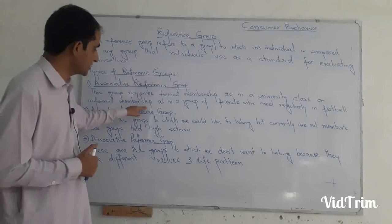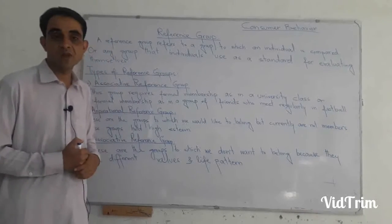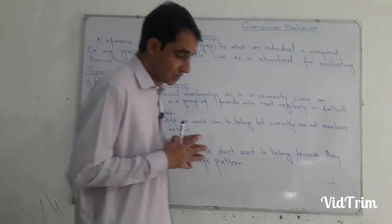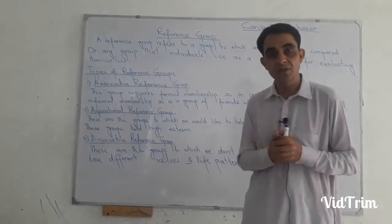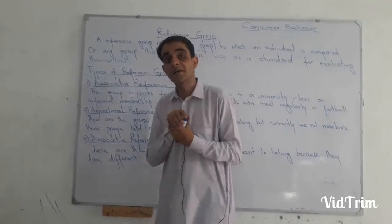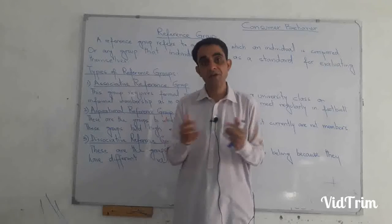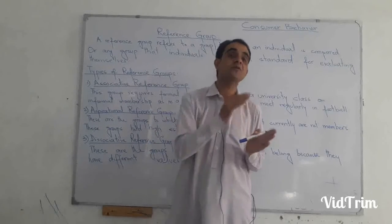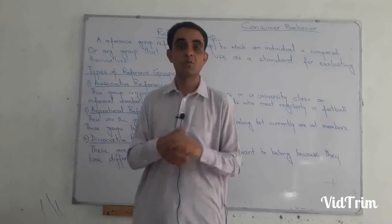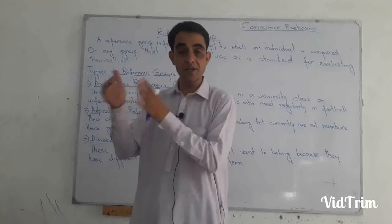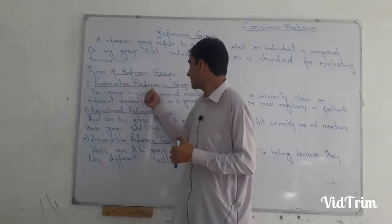Formal membership is required in a university class, while informal membership applies to a group of friends who meet regularly, like in football. To become a member of an associative reference group, you need to fulfill certain criteria. For your university semester group, you first need to do matriculation, then 12th grade, and then you will be able to take admission to university to start BBA. Similarly, for a football club, you need to play for years to be able to join a club.